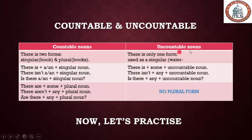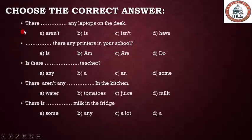Now let's practice together — choose the correct answer. Number one: 'There ___ any laptops on the desk.' 'Laptops' is a plural noun, so we use 'are' or 'aren't,' and we use 'any' in the negative form, so the answer is 'aren't.'